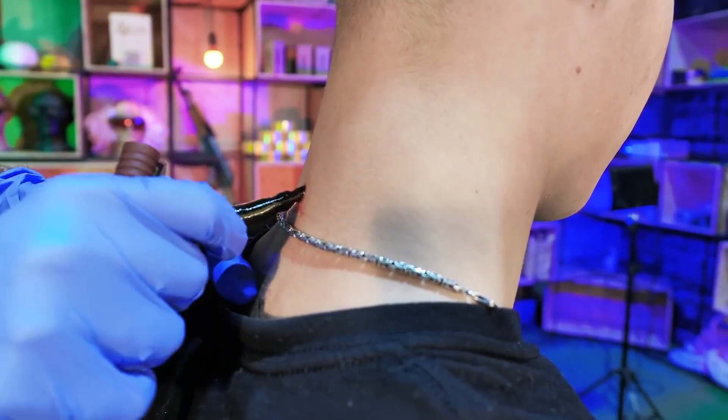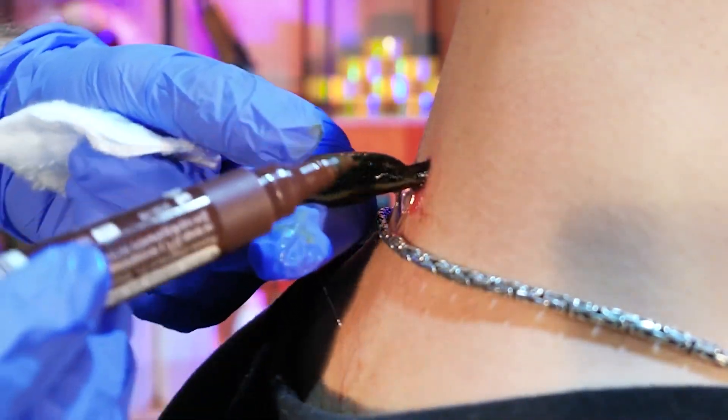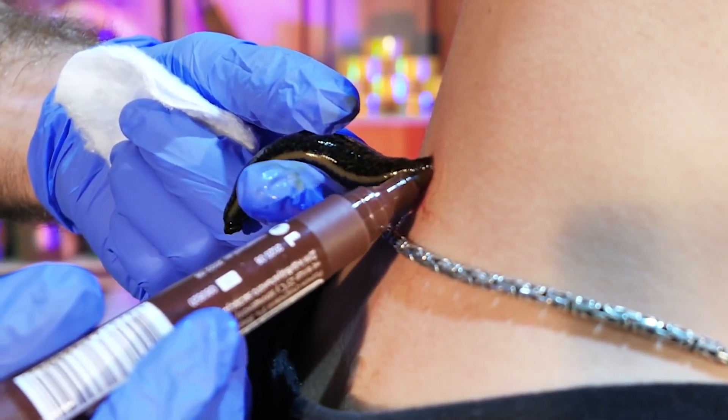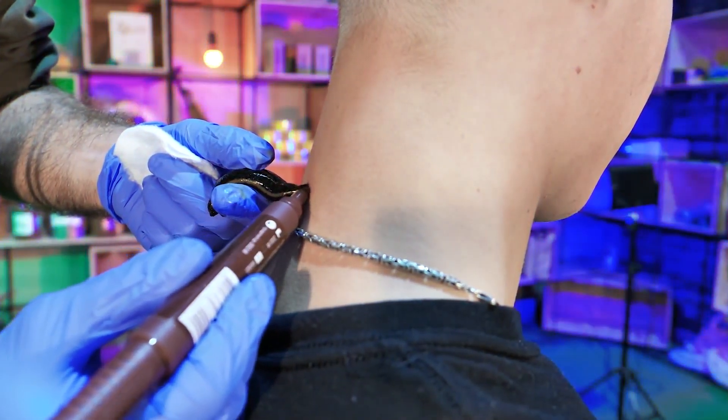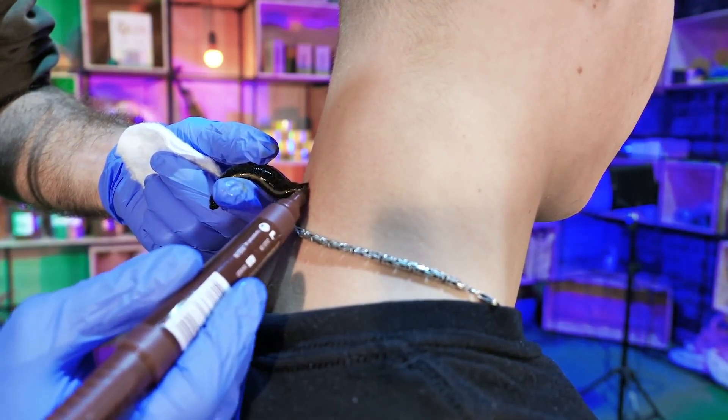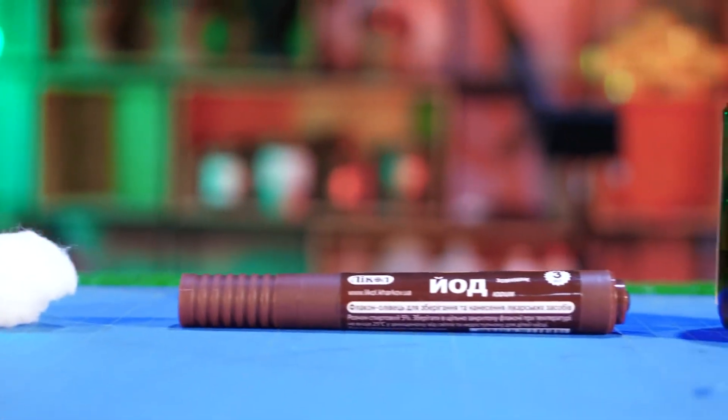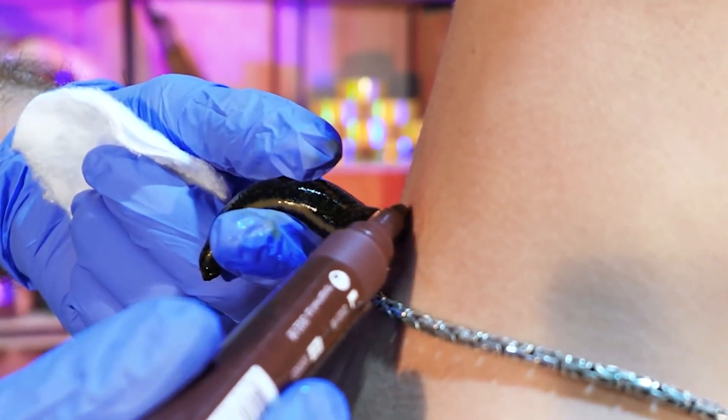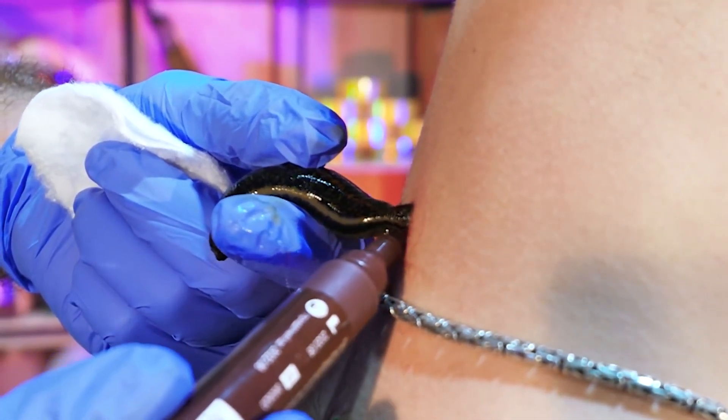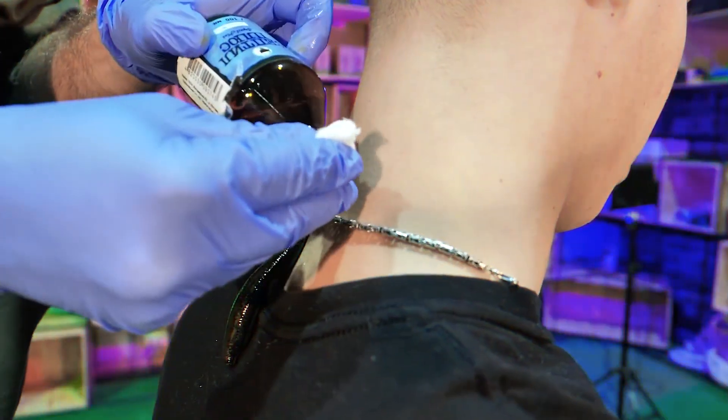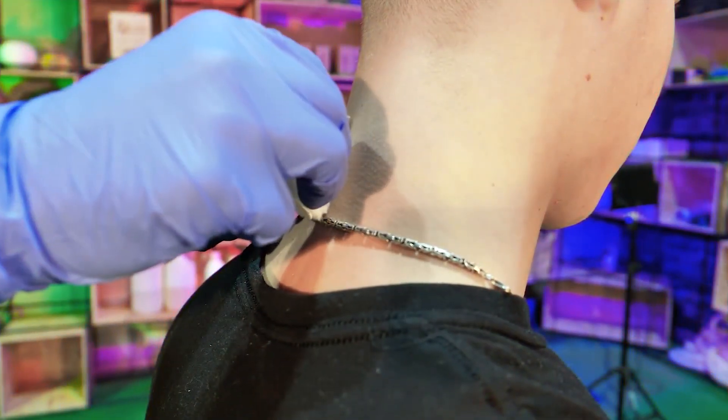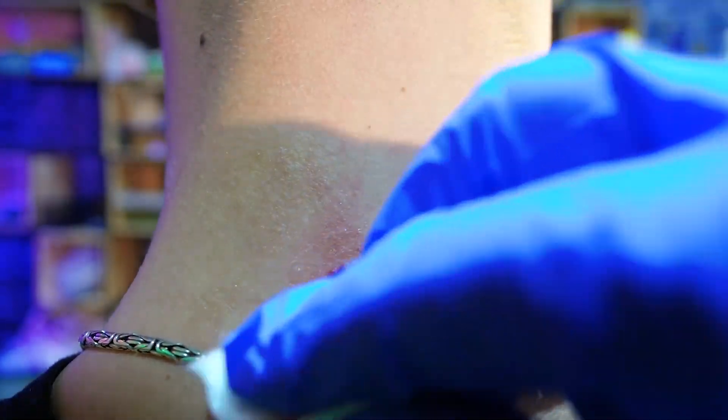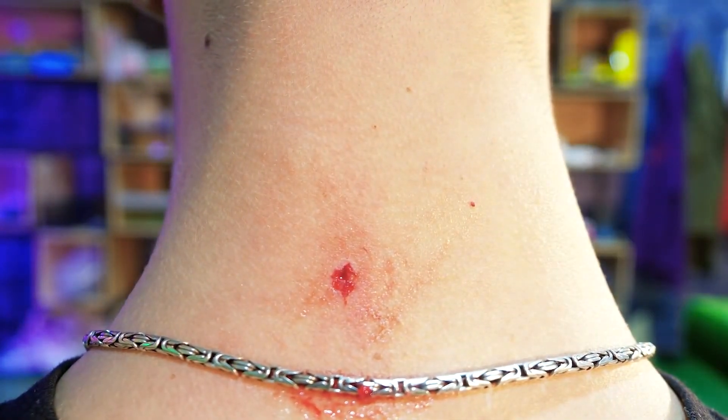It's time to remove the leech. By the way, the leech should never be torn off or subjected to mechanical effects, as this can leave teeth in the wound that can cause suppuration. The right thing is to bring absorbent cotton with iodine, alcohol, or sprinkle salt.